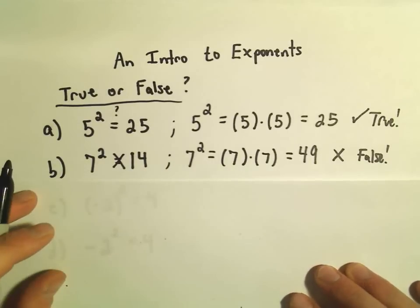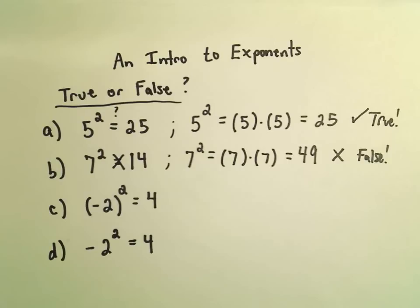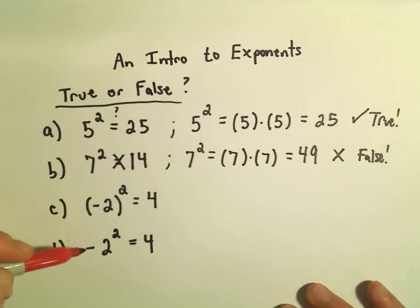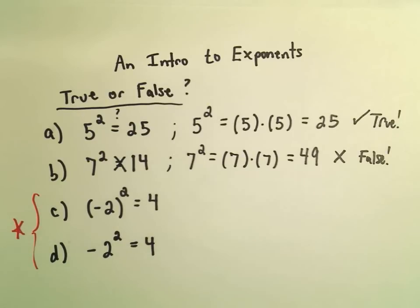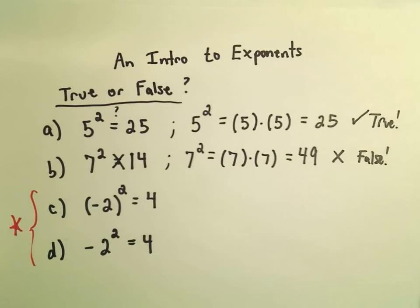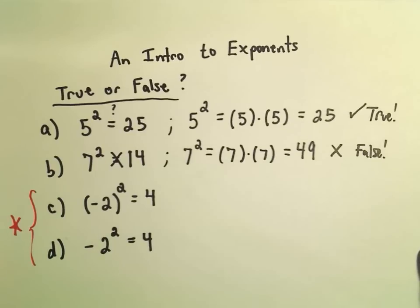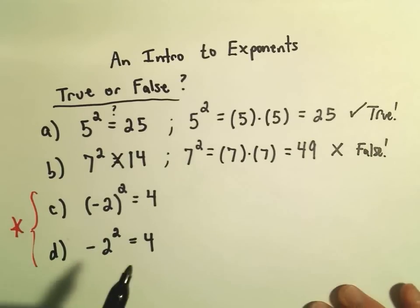Let's look at the last two here. We've got negative 2 all squared, and then we have negative 2 squared. There's definitely a difference here. Let's be real careful. This is definitely one of the most common mistakes that occur.